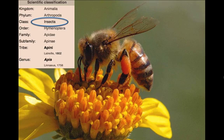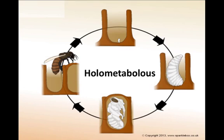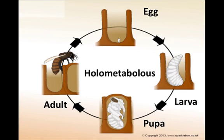The honeybee sits in the class Insecta, in the order Hymenoptera, and their genus is Apis. Bees are holometabolous, meaning that they go through four different life cycles: egg, larva, pupa, and adult. In this presentation I am going to focus on the adult honeybee.